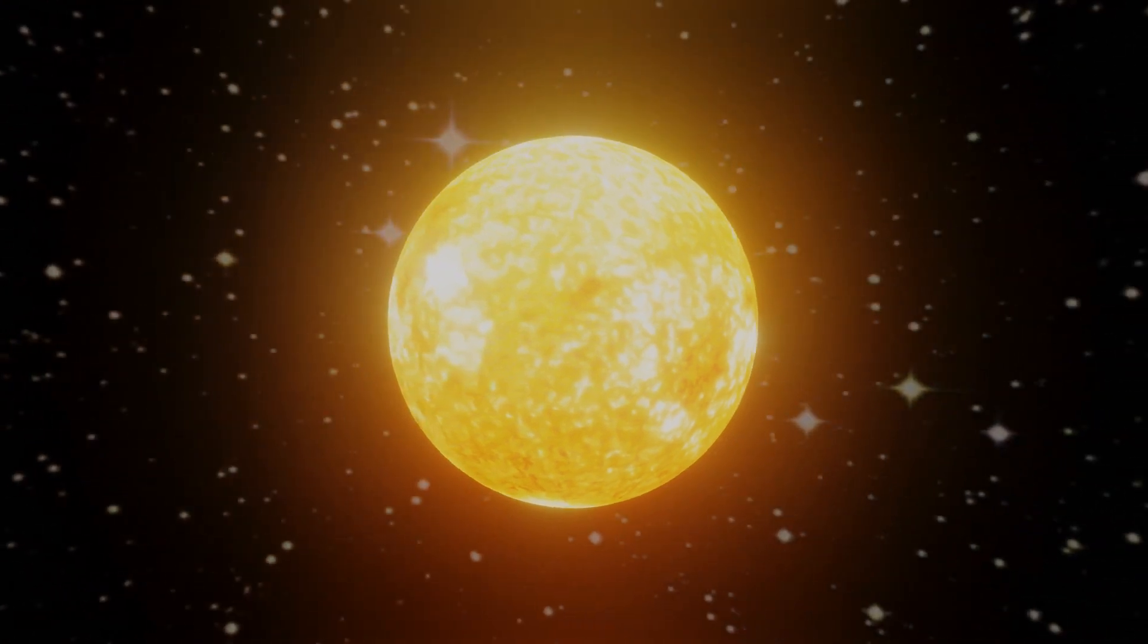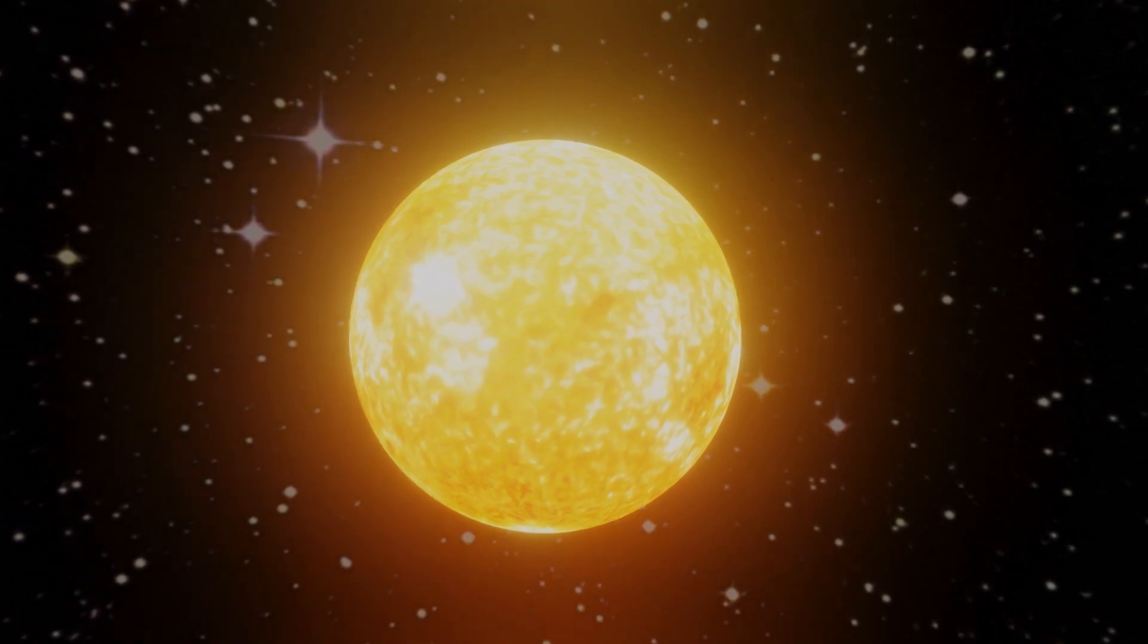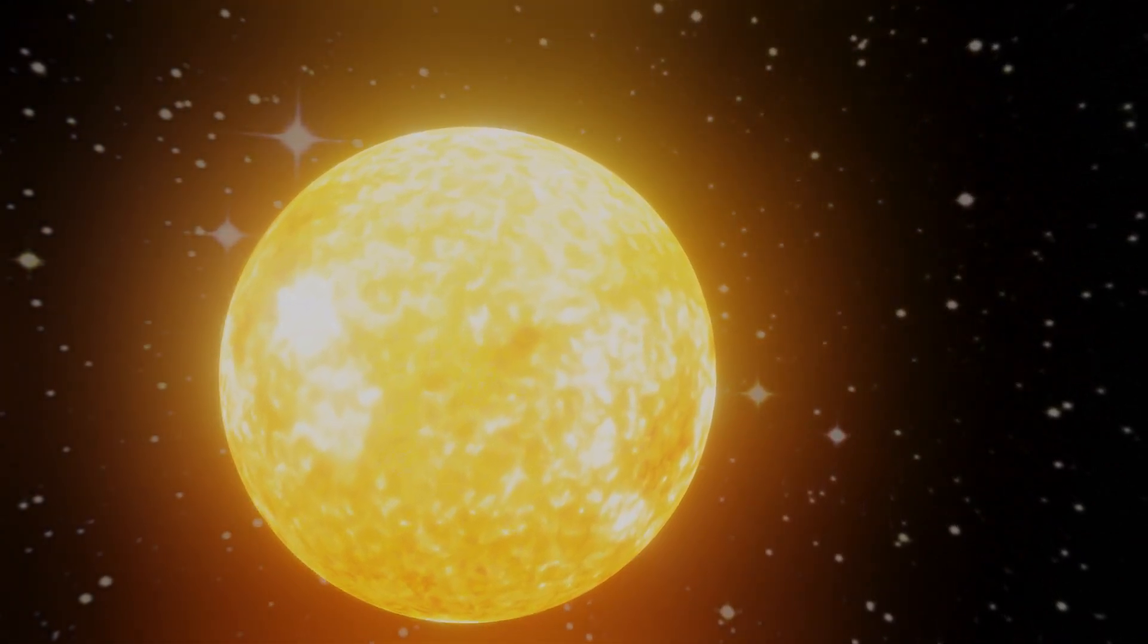However, for the aurora to truly occur, a coronal mass ejection, aka a solar storm is needed. Coronal mass ejections, or CMEs, consist of a huge amount of plasma.